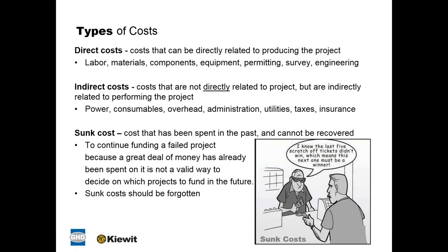There are three types of costs to be aware of. First, direct costs are costs that can be directly related to producing the project, such as labor, materials, components, equipment, and engineering. Typically in a cost estimate, you may find a quote for a piece of equipment, but just that piece of equipment is not enough — all those other direct cost items need to be considered.